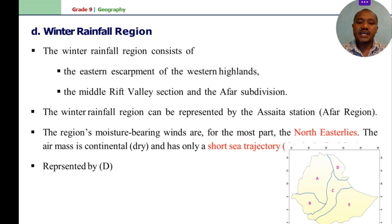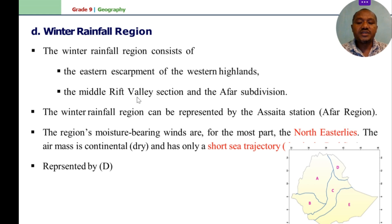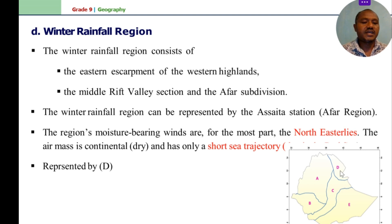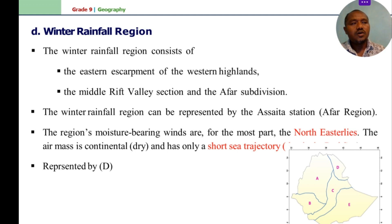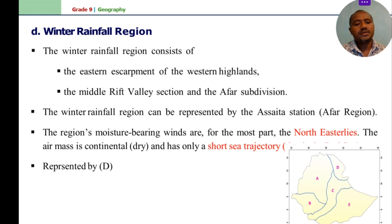The winter rainfall region consists of the eastern escarpments of the western highlands, the middle rift valley sections, and the Afar subdivisions. It can be represented by the Asaita station. The moisture-bearing winds are for the most part north-easterly. The air mass is continental or dry and has only a short sea trajectory.